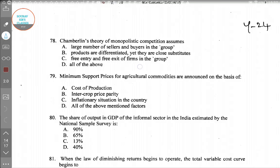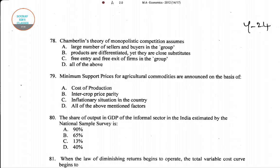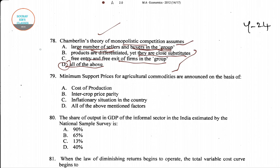Question number 78 asks: Chamberlain's theory of monopolistic competition assumes — options are: large number of sellers and buyers, products are differentiated yet close substitutes, free entry and exit of firms in the group, or all of the above. Option D is the right answer, because all three conditions hold in Chamberlain's theory of monopolistic competition.